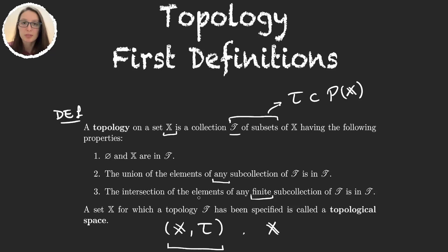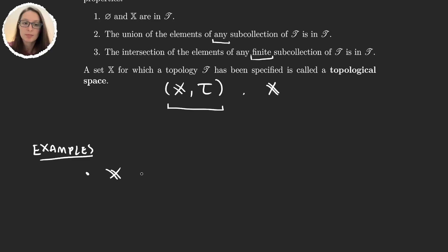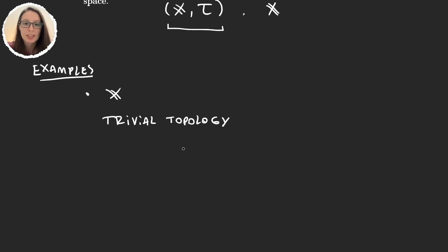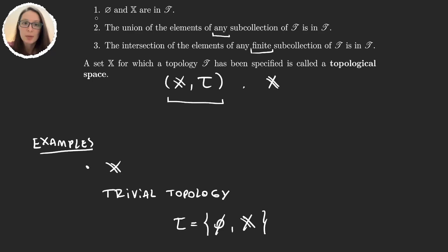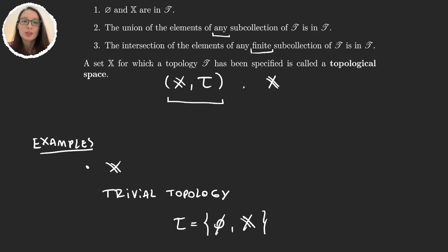This definition seems a bit abstract, so let's work on a few examples. Given some set X, we can think immediately of two topologies. The first is the trivial topology, defined as just the empty set and the whole set. It obviously satisfies property one. The only union we can get is X union the empty set, which is X, so property two holds. And the intersection of the empty set with X gives the empty set, which is in the topology. So it's also called the indiscrete topology.